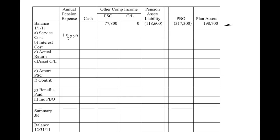Remember, that's our employees working another year, so therefore we owe them a little bit more — we expense that and increase our obligation. Interest cost we actually need to calculate. Interest cost is beginning of the period PBO times the settlement rate, which is 10%, so we're just moving the decimal point. That's going to be 31,730. Remember that behaves the same way in the worksheet as service cost does. I typically just do those two first and knock them out.